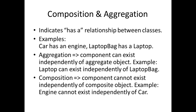Now let's look at composition and aggregation, which imply a has-a relationship between classes. For example, a car has an engine, a laptop bag has a laptop. There is a subtle difference between aggregation and composition — composition is stricter. In aggregation, the component can exist independently of the aggregate object; for example, a laptop can exist independently of the laptop bag. In composition, the component cannot exist independently; for example, if an engine cannot exist without a car. When the composite object is destroyed in composition, the component is also automatically destroyed, whereas in aggregation, the component can exist independently even if the aggregate is destroyed.